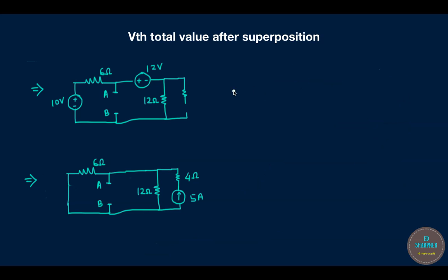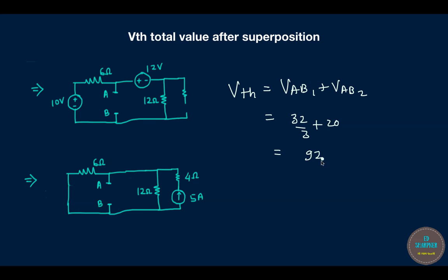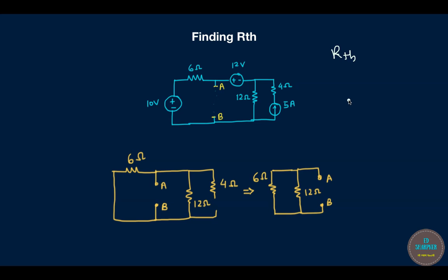Adding the two results together: Vth = Vab1 + Vab2 = 32/3 + 20 = 32/3 + 60/3 = 92/3 V. Now that we have Vth, we can find Rth. To find Rth, short all voltage sources and open-circuit all current sources. That means a short in place of the 10 V battery, a short in place of the 12 V battery, and an open circuit in place of the 5 A current source.